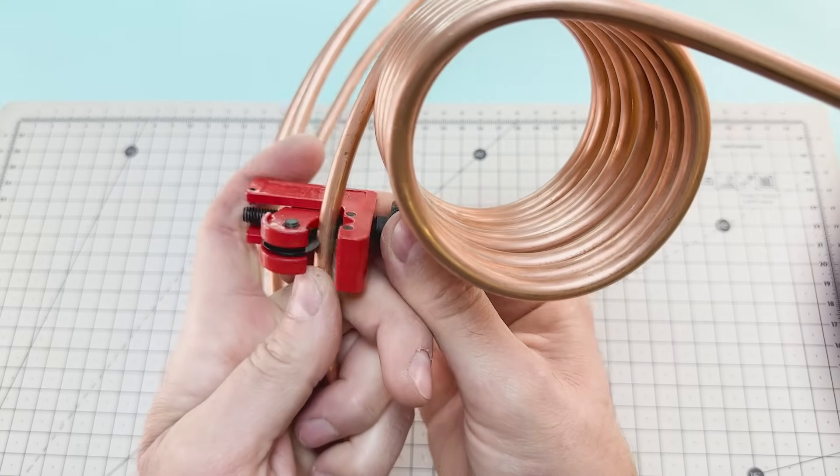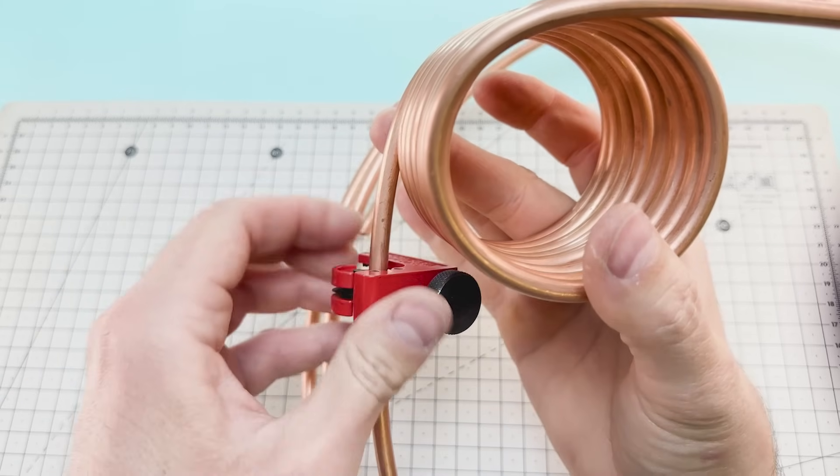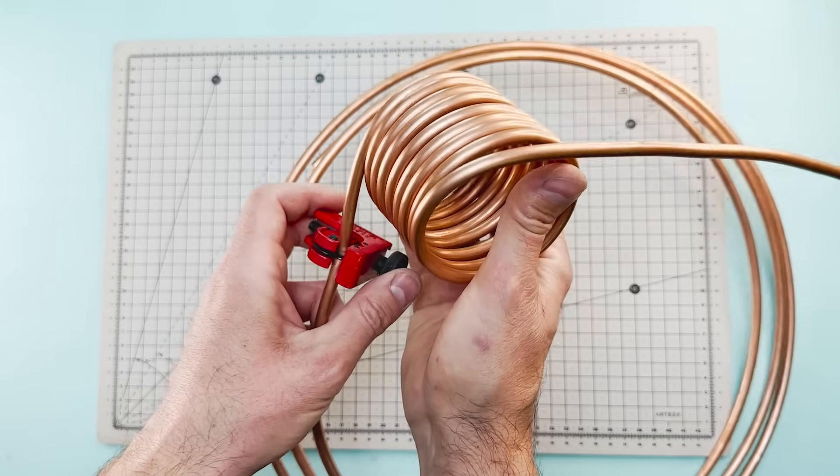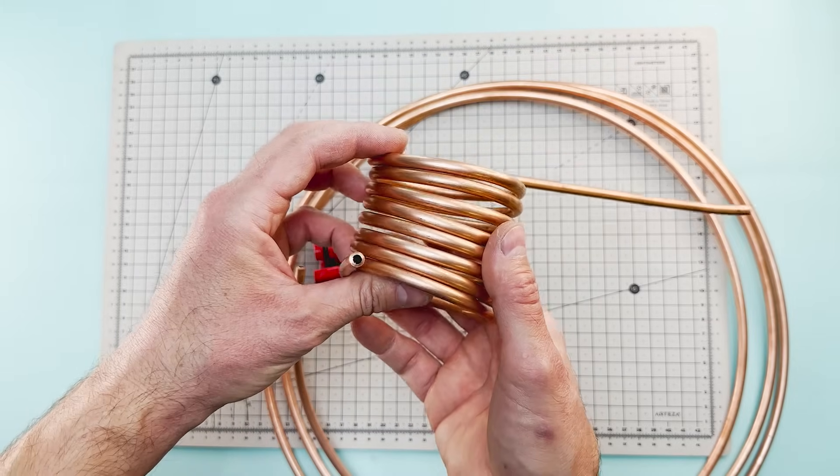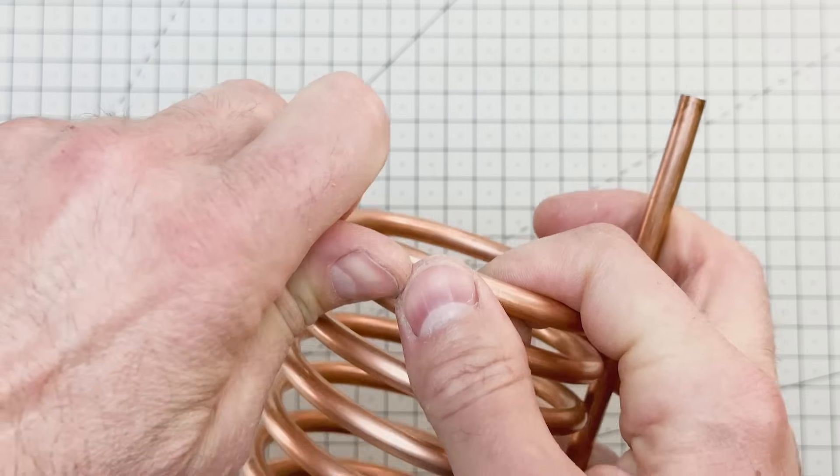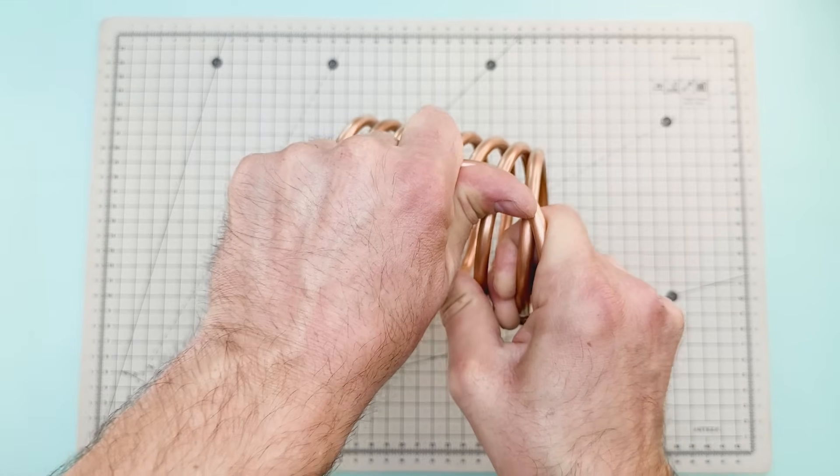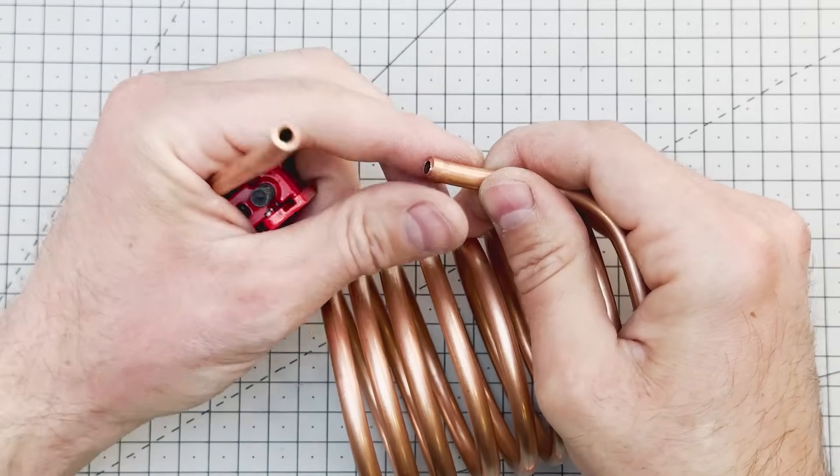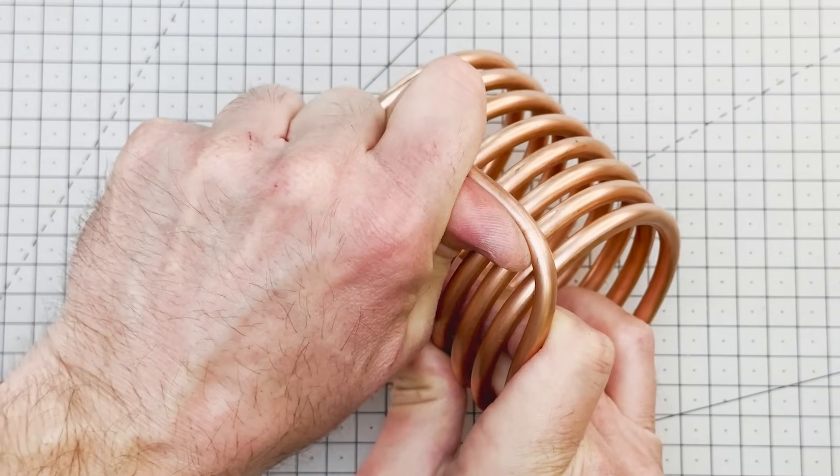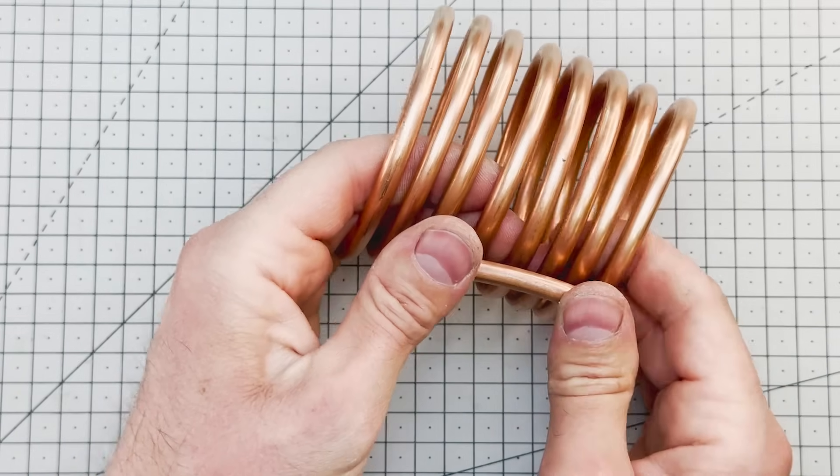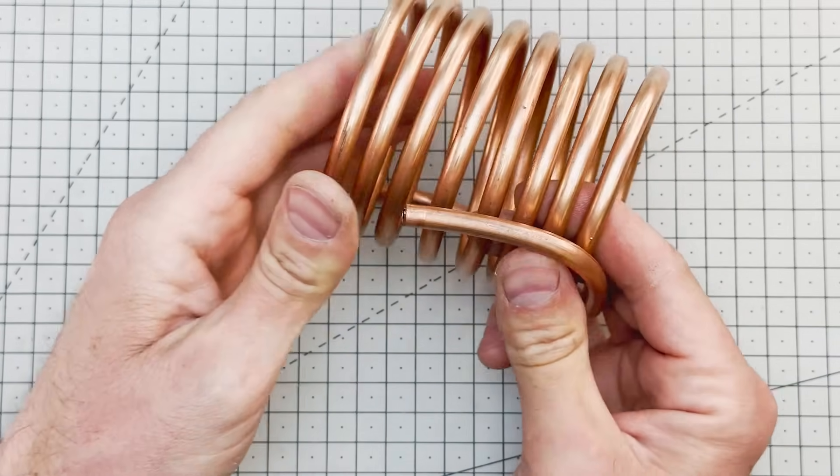Once we have about 8 loops, we proceed to cut the tube and slightly bend the ends so we can connect them later on. This tube, thanks to its excellent thermal conductivity, will serve as our evaporator.